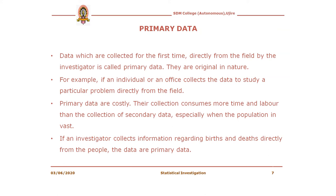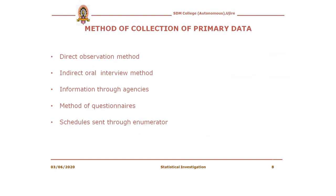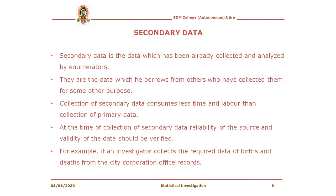Primary data are costly — their collection consumes more time and labor than the collection of secondary data, especially when the population is vast. Methods of collection of primary data are: direct observation method, indirect oral interview method, information through agencies, and method of questionnaire and schedules sent through enumerators.